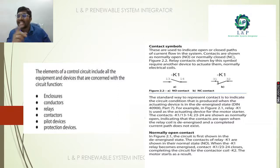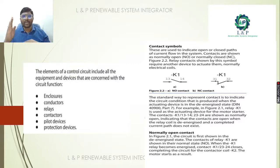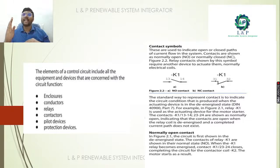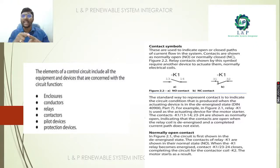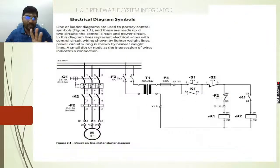The most basic contact symbols are the NO contact (normally open) and the NC contact (normally closed). For emergency conditions we typically use the NC contact. For normal switching operations, the circuit remains open. When the electric coil is energized, the contact immediately changes position from open to closed, making continuity and completing the circuit. NO and NC contacts are used in most control circuits.